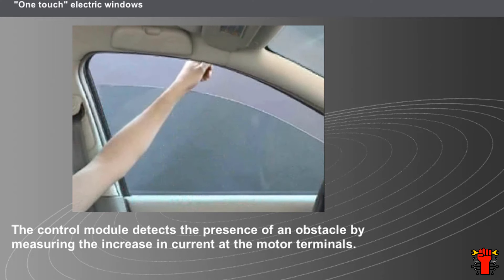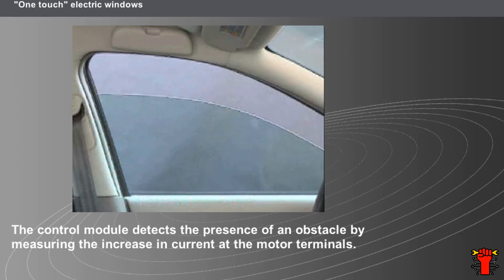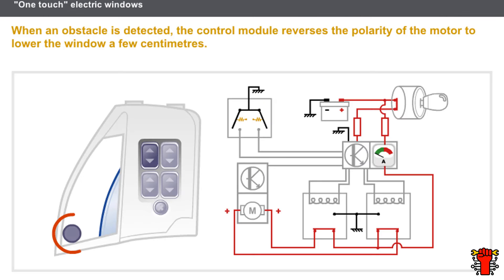The anti-pinch mechanism automatically immobilizes the window and lowers it slightly as soon as an obstacle is detected. The control module detects the presence of an obstacle by measuring the increase in current at the motor terminals. When an obstacle prevents the window from raising, the motor locks, and the control module detects the increase in current.